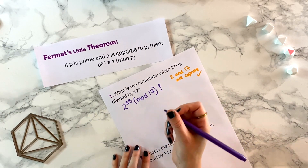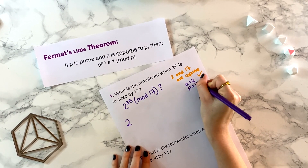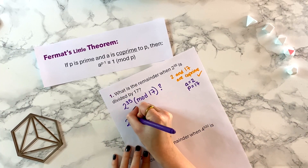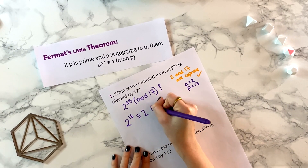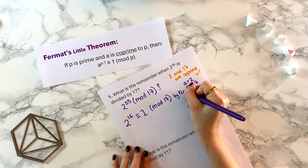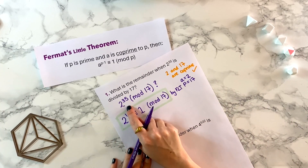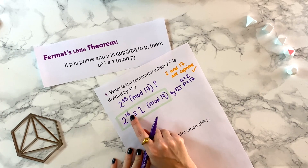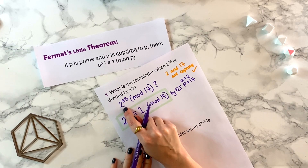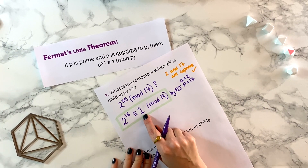We're using a equals two and p equals seventeen. By Fermat's Little Theorem, two to the power of seventeen minus one — which is sixteen — is congruent to one mod seventeen. Now we're trying to find two to the thirty-five mod seventeen, and we know something useful about two to the sixteen. We're told straight away that two to the sixteen is congruent to one.